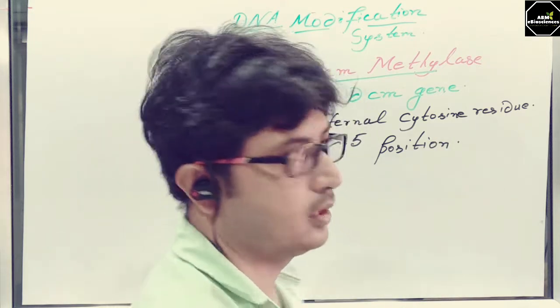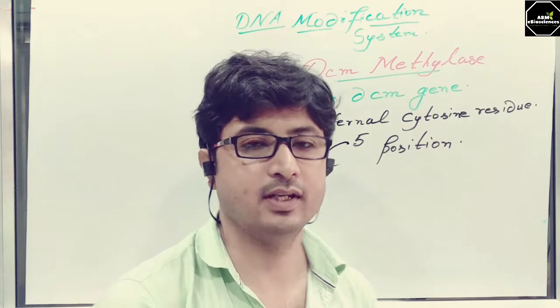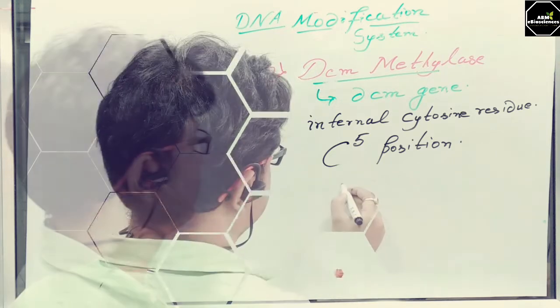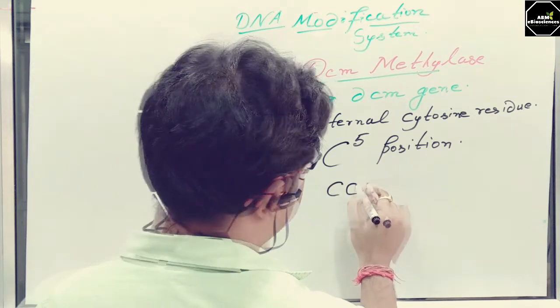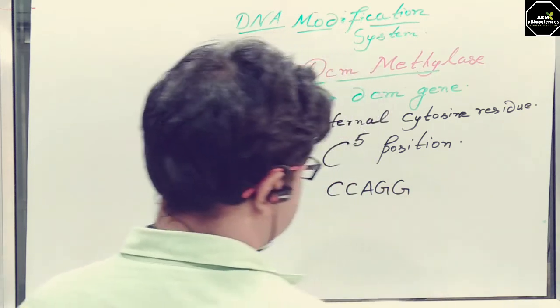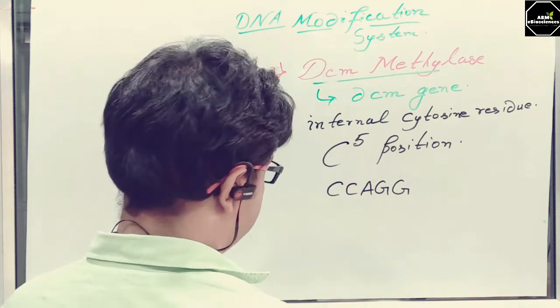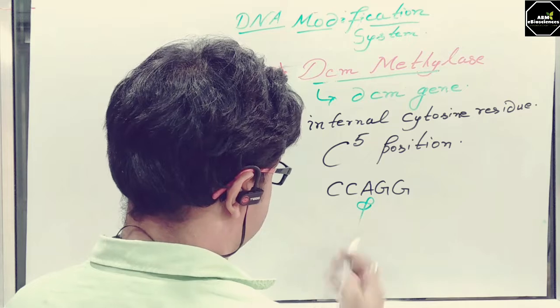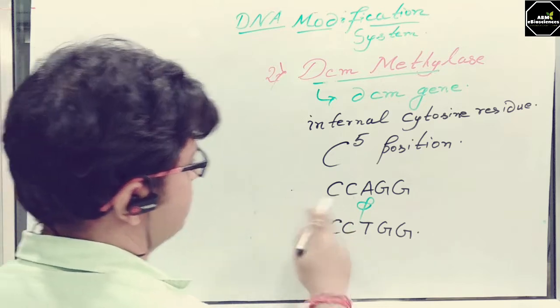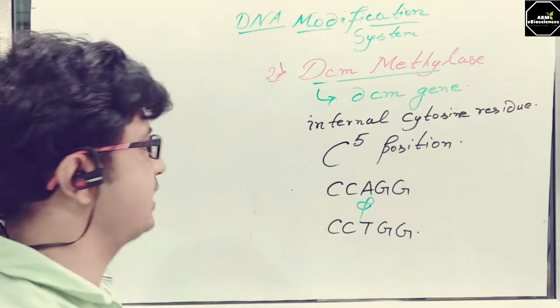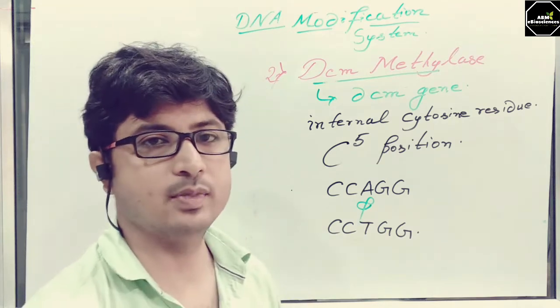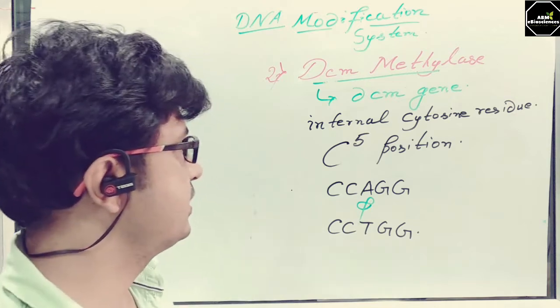The cytosine residue present in the sequence will be modified by this enzyme in C-5 position. What will be the sequence which is being modified? In case of DCM it is C-C-A-G-G and C-C-T-G-G. These two sequences where the internal cytosine residue in the five position is being methylated by this enzyme. This is the second one.